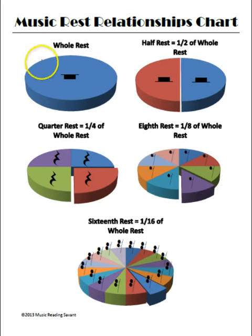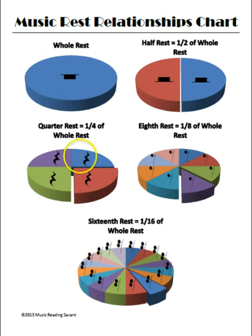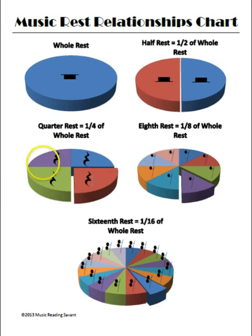Now if I take the same piece of pie and divide it into four pieces, I have a quarter rest. So one out of four — a fourth or a quarter — is a quarter rest. That gives you an even deeper understanding of why they call it a quarter rest. This is one out of four pieces; it is a total of one count.